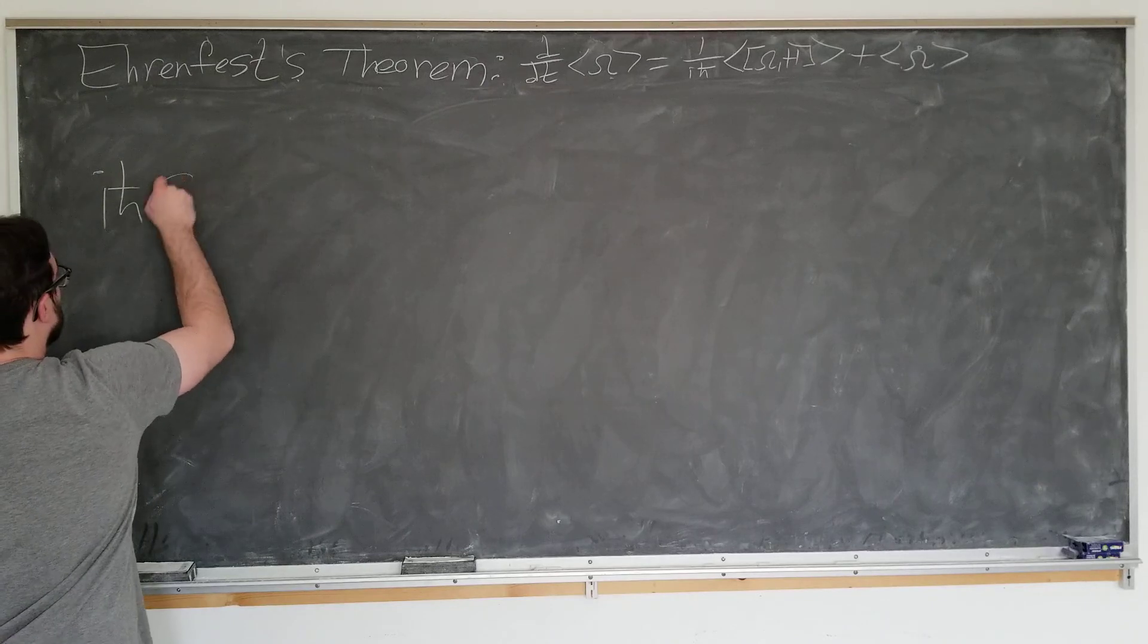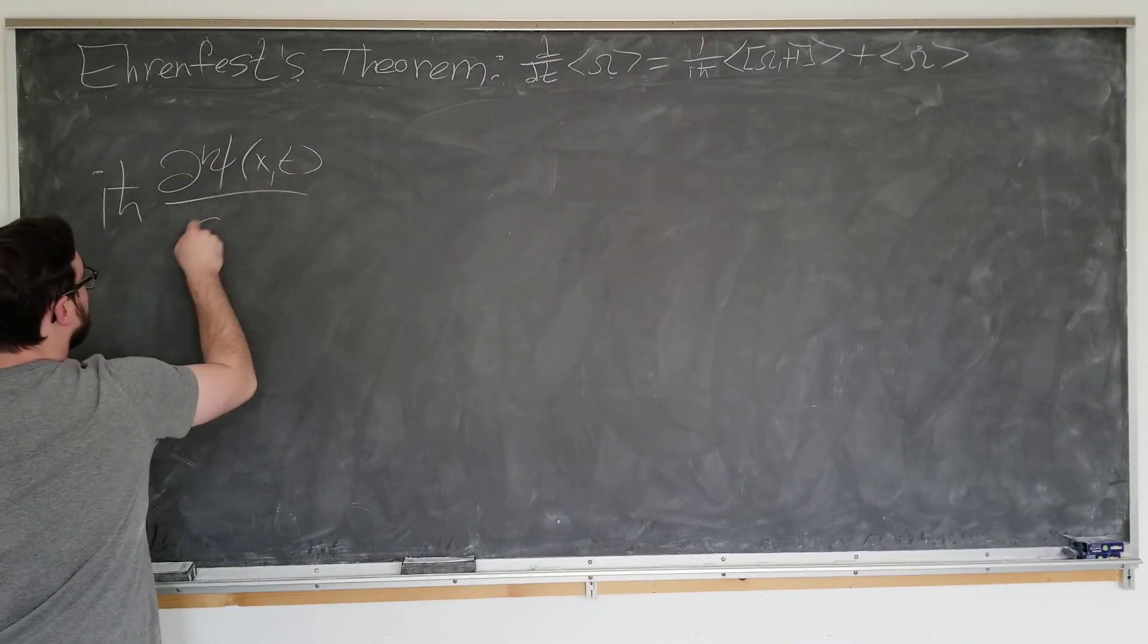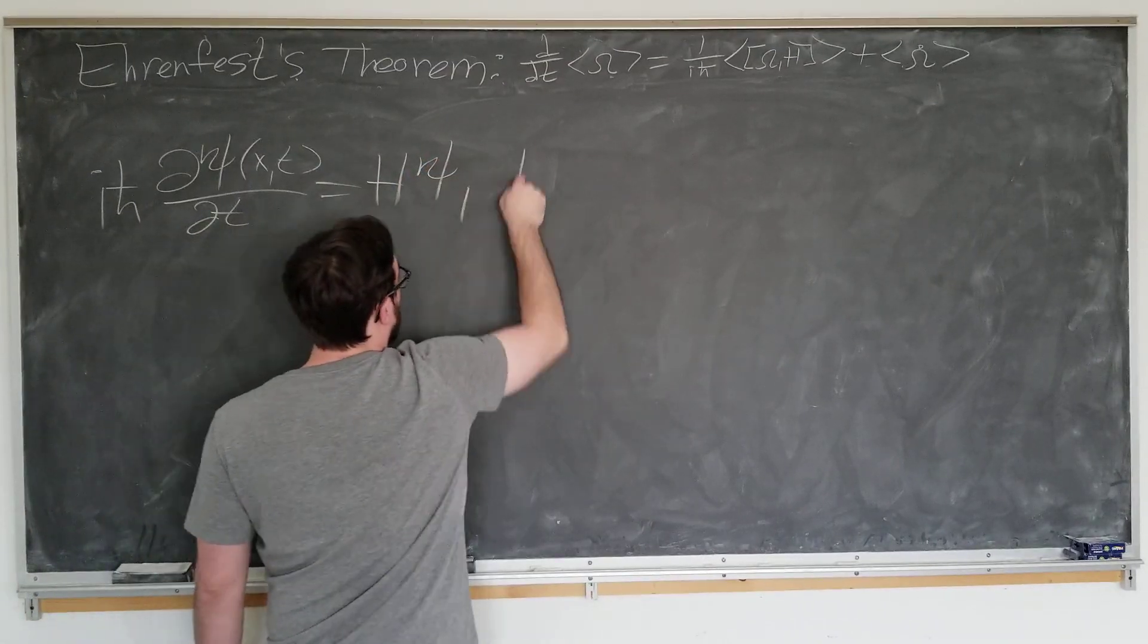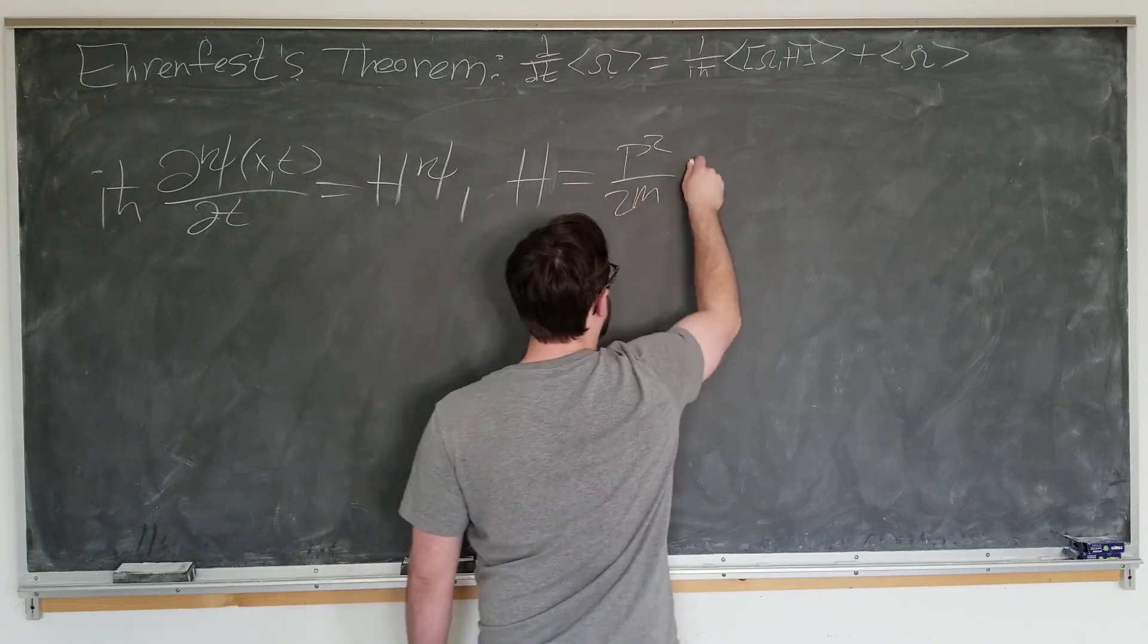Ehrenfest Theorem follows from the Schrodinger equation, which is i h bar d psi by dt equals h psi, where h is the Hamiltonian operator, p squared over 2m plus v.